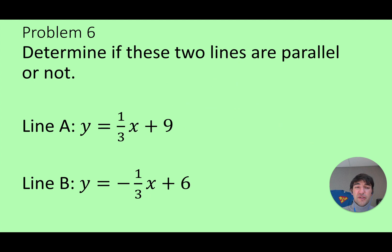Very cool. How about these ones? We'll check it out. Slope of line A is one-third. Slope of line B is negative one-third. So those are not the exact same slopes. So these lines are not parallel.